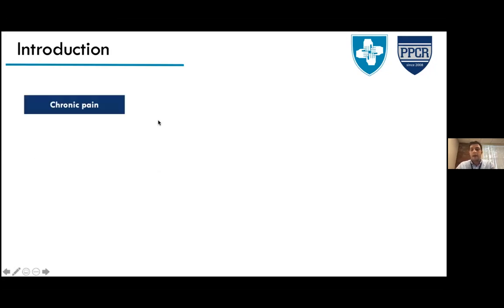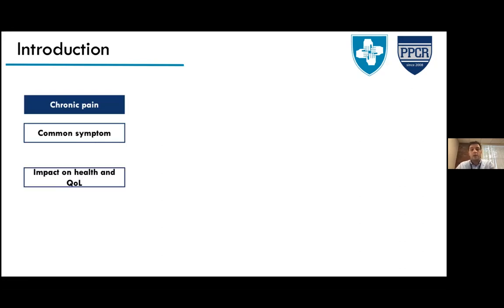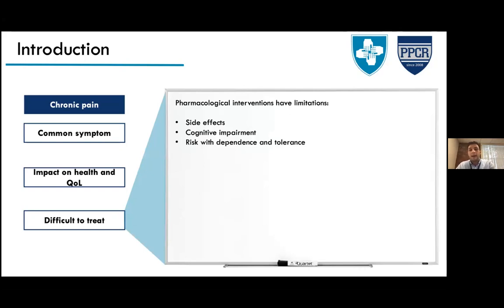The main reason for this research is that chronic pain is a common symptom in multiple sclerosis with a huge impact on health and quality of life. Chronic pain — not only in MS but across other etiologies — is a condition that's difficult to treat, mainly because treatment is based on pharmacological interventions that have limitations such as side effects, cognitive impairment, high risk of dependence, and tolerance.